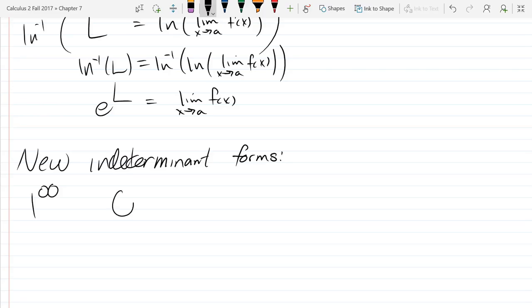The next indeterminate form, 0 to the 0 power. So normally, raised to the 0 power, you get 1, except 0 raised to anything, almost anything, is 0. So is it 0 or is it 1 or is it something else? So here's another indeterminate form.